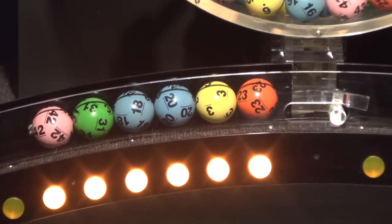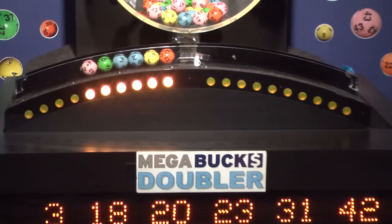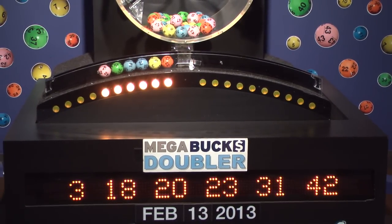Once again, the winning Megabucks Doubler numbers for Wednesday, February 13, are 3, 18, 20, 23, 31, and 42.